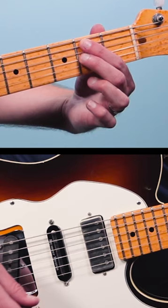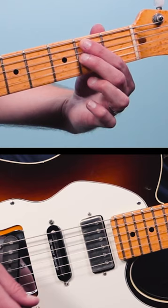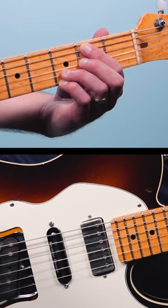Play the 2nd fret on the 5th string, the 2nd fret on the 3rd string, the 3rd fret on the 2nd string, and the 3rd fret on the 1st string. Now I'm going to mute the other strings, so mute the 4th and the 6th string.